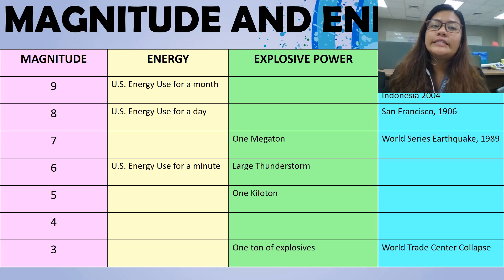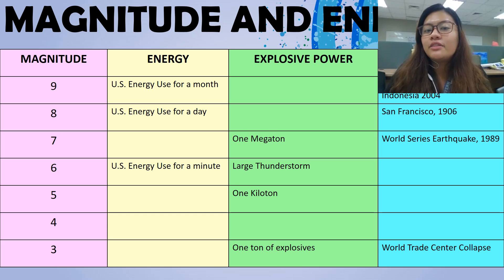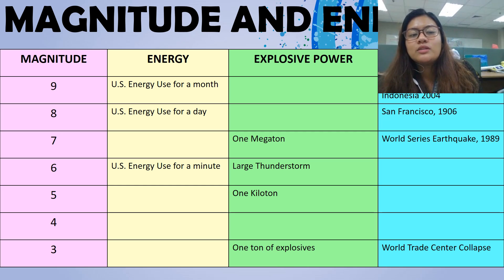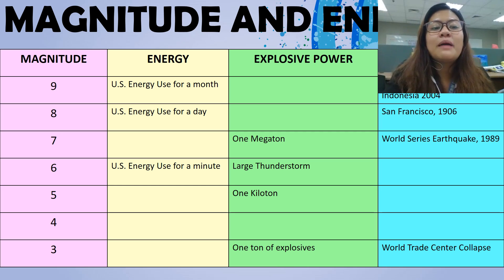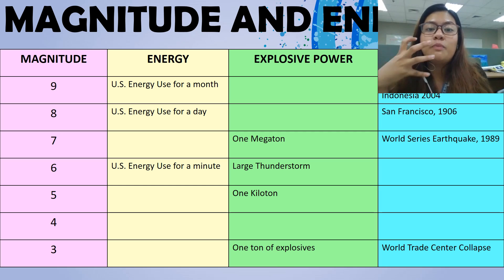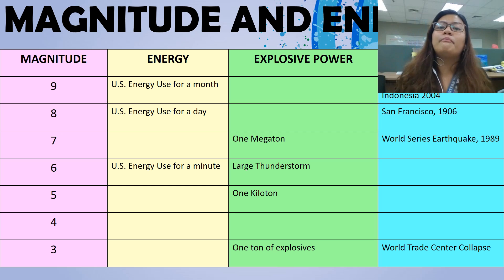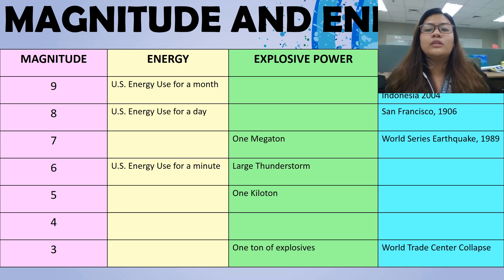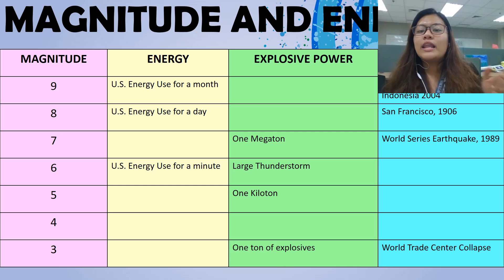Here's a tabulated view of the magnitude and energy being released — magnitude, energy, explosive power, and example. As you can see, magnitude 3 equals about 1 ton of explosive power. And magnitude around that level is actually comparable to the force that caused the World Trade Center collapse.